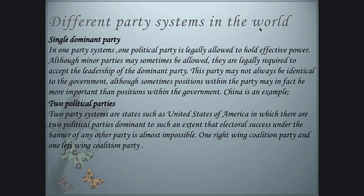Now, different party systems in the world. In a one-party system, one political party is legally allowed to hold effective power; minor parties may be allowed but are required to accept the leadership of the dominant party — China is an example. In a two-party system, such as the United States, two parties are dominant to such an extent that electoral success under any other party is almost impossible, with one right-wing and one left-wing coalition party.